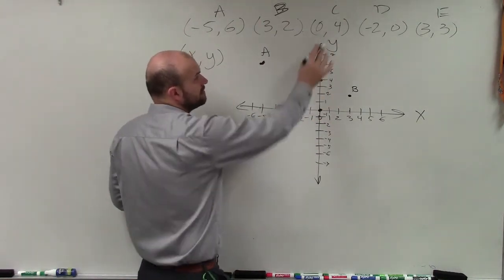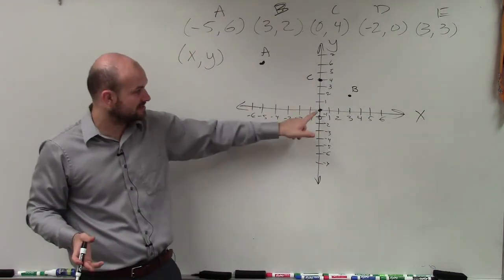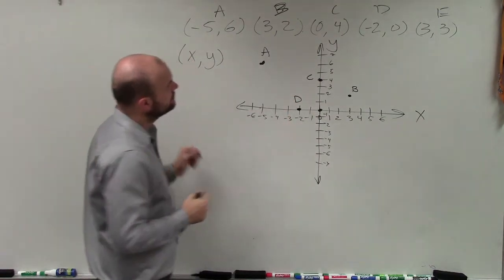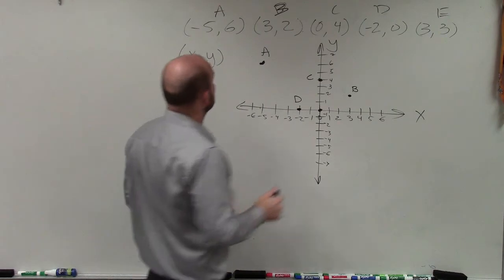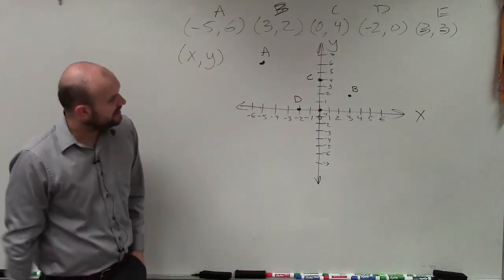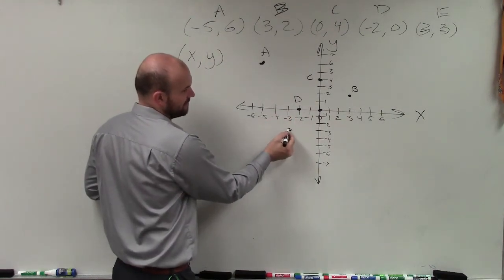For D, my x value is negative 2, but my y value is 0. That means I'm not going up or down on the y-axis. So that's going to be D. And let's make this, I didn't do one of these. Let's make this a double negative. So E will be negative 3. So the x value is negative 3. Y value is negative 3.